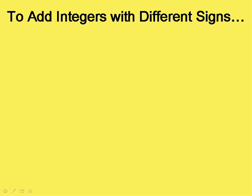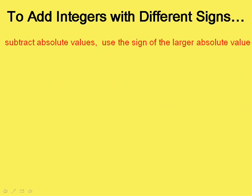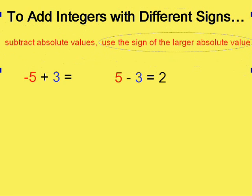To add integers with different signs, one of each, we subtracted the absolute values of the original numbers and then use the sign of the number with the larger absolute value. For instance, negative five plus three. We subtracted their absolute values. Just forget the signs, in other words. Five minus three and got a number of two. Now, we made the answer a negative two because the number with the largest absolute value was negative five. So his sign goes with the answer and the answer is negative two.